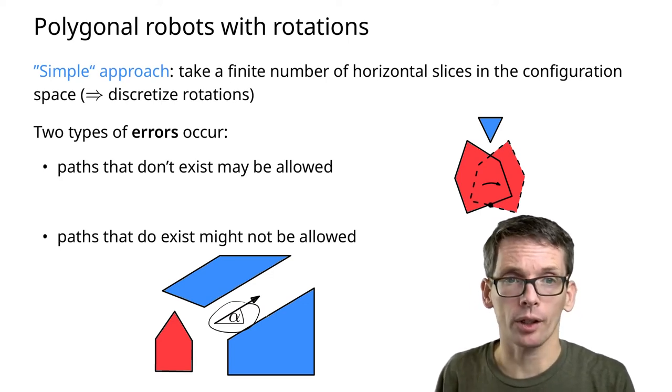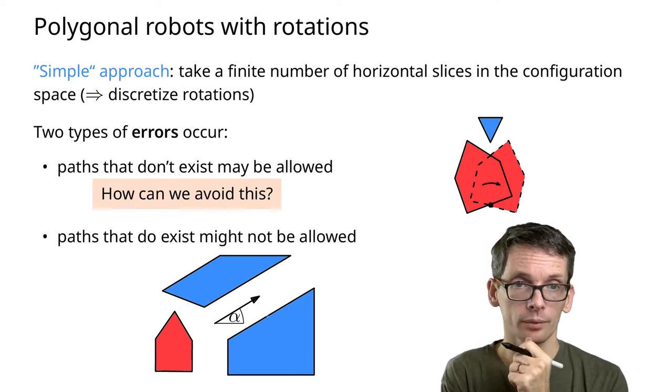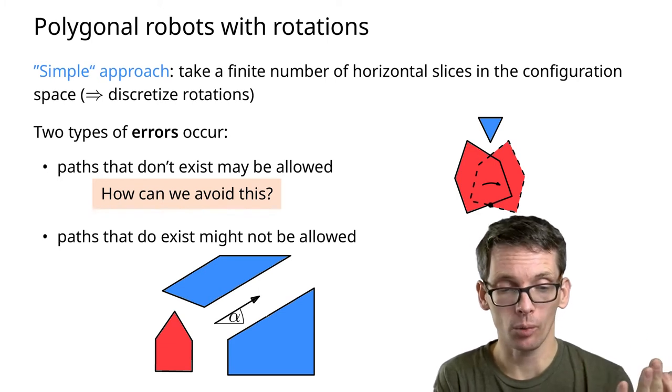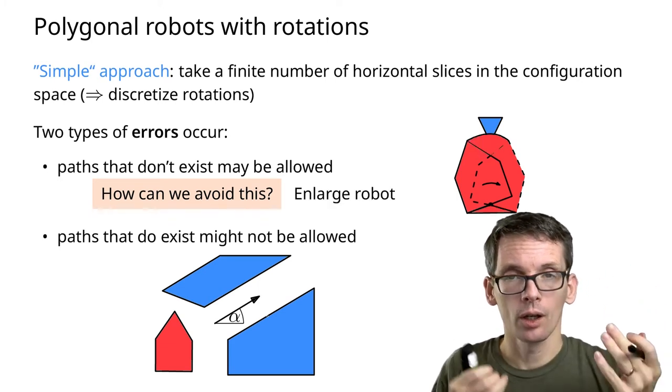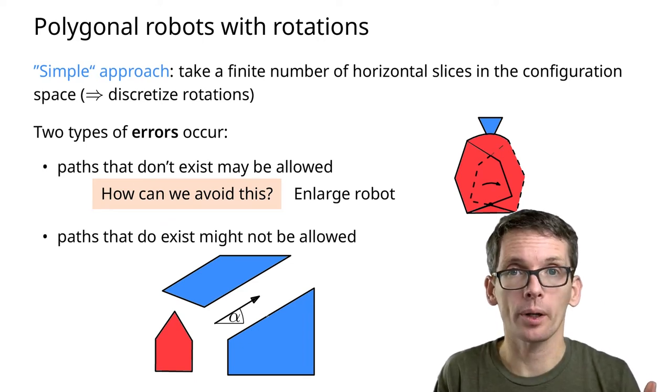As soon as there is slightly wiggle room, I'll be able to do it with sufficient approximation. But the first error, that one we really want to avoid. How can we do that?